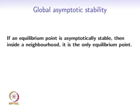What is global about the asymptotic stability of an equilibrium point? If an equilibrium point is asymptotically stable, then inside some neighborhood it is in fact the only equilibrium point. All trajectories beginning within that neighborhood converge to that equilibrium point. We are curious if this equilibrium point is globally asymptotically stable — meaning no matter where the initial condition is, all trajectories converge to the same equilibrium point asymptotically.